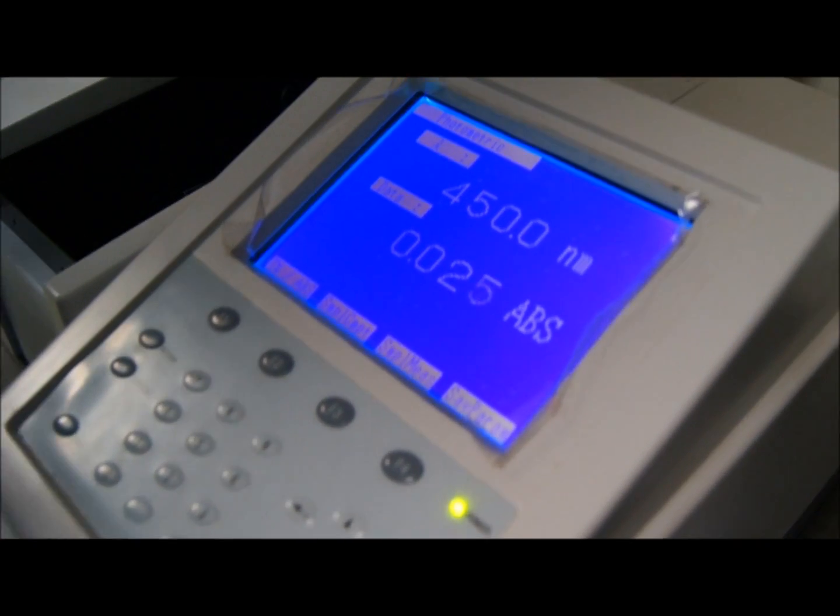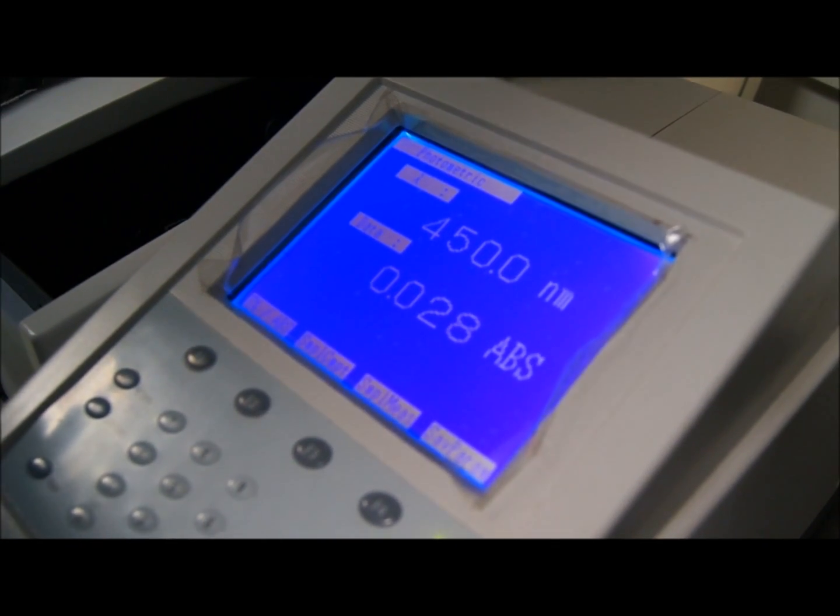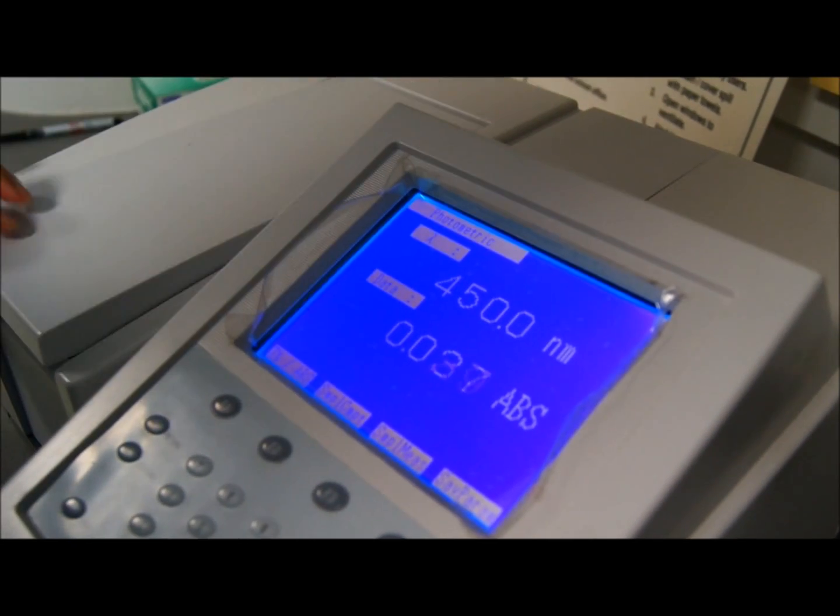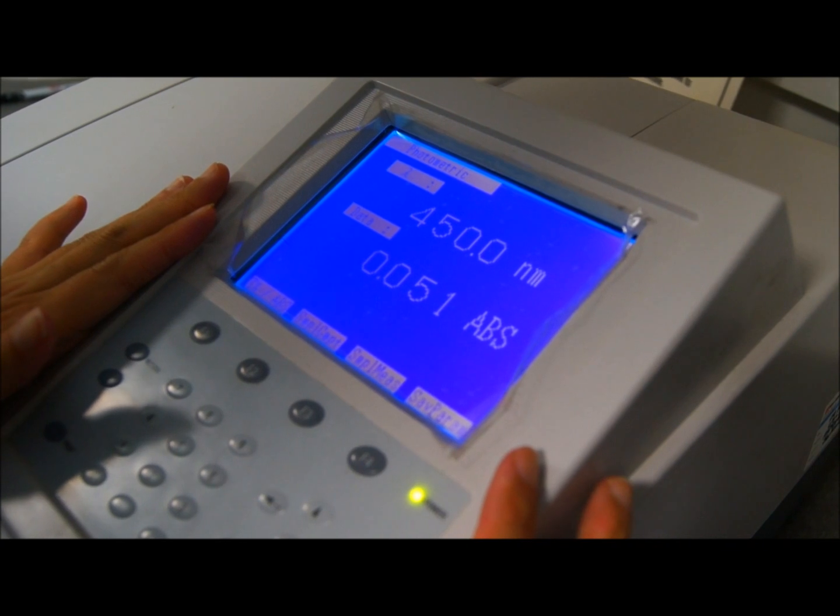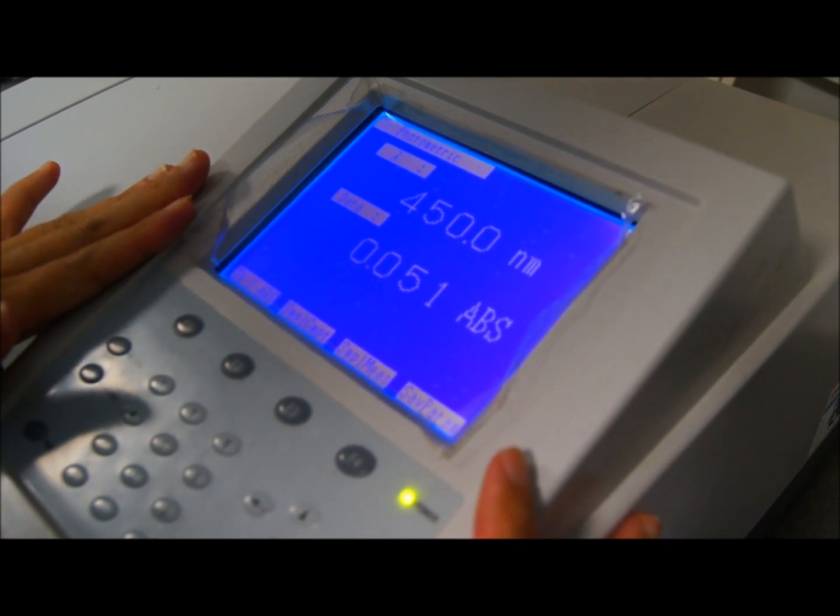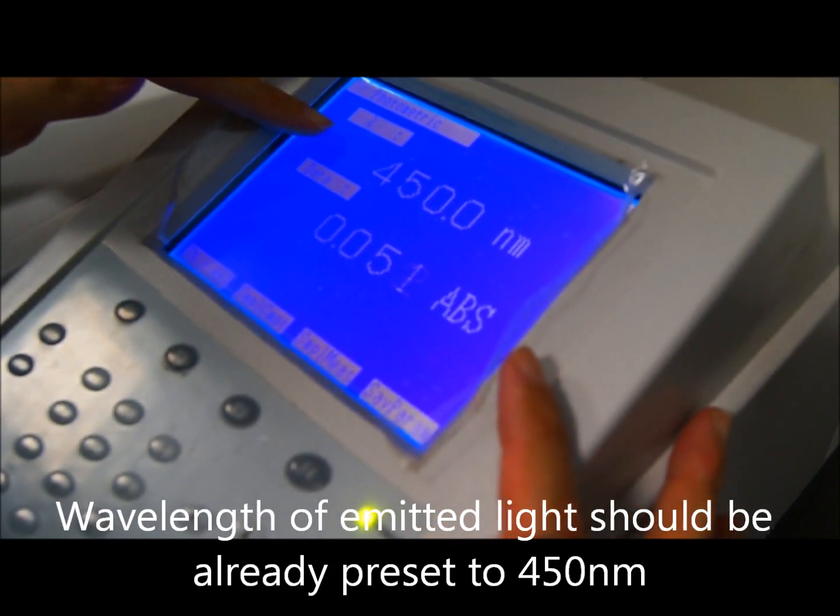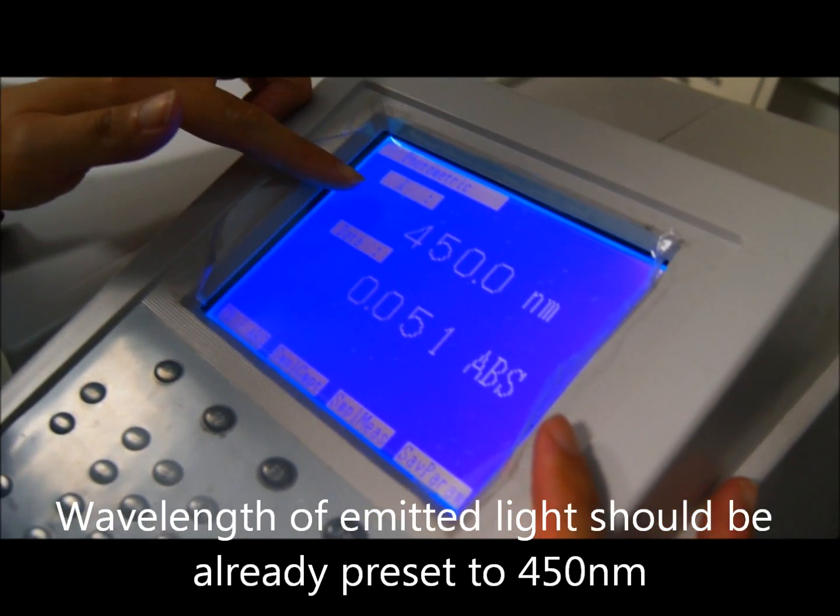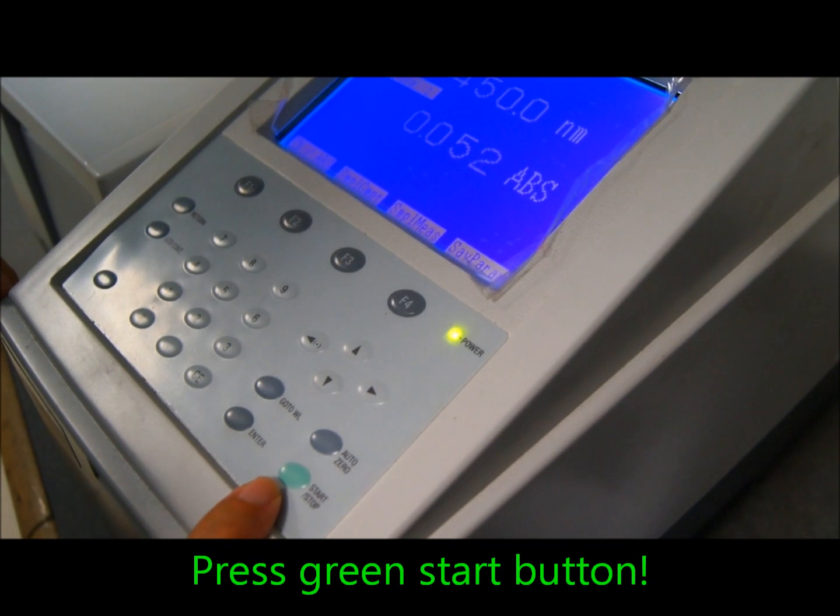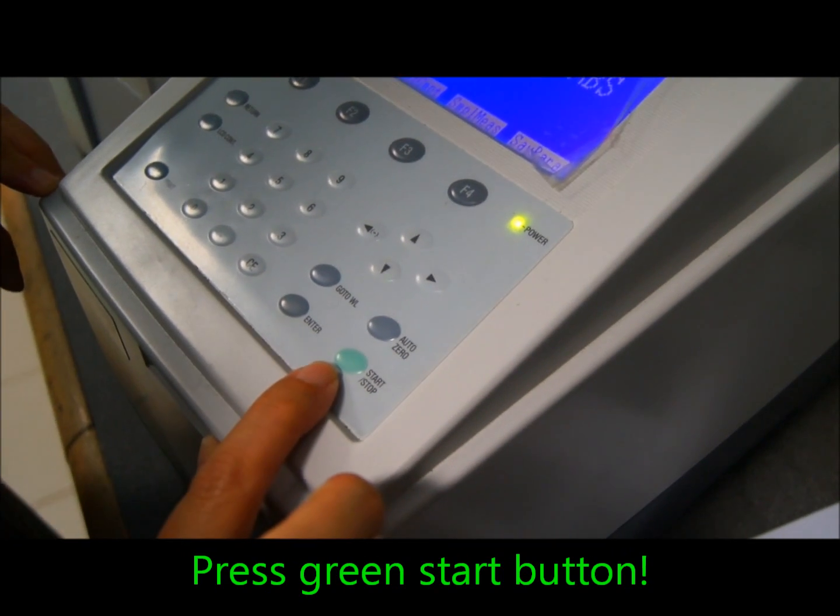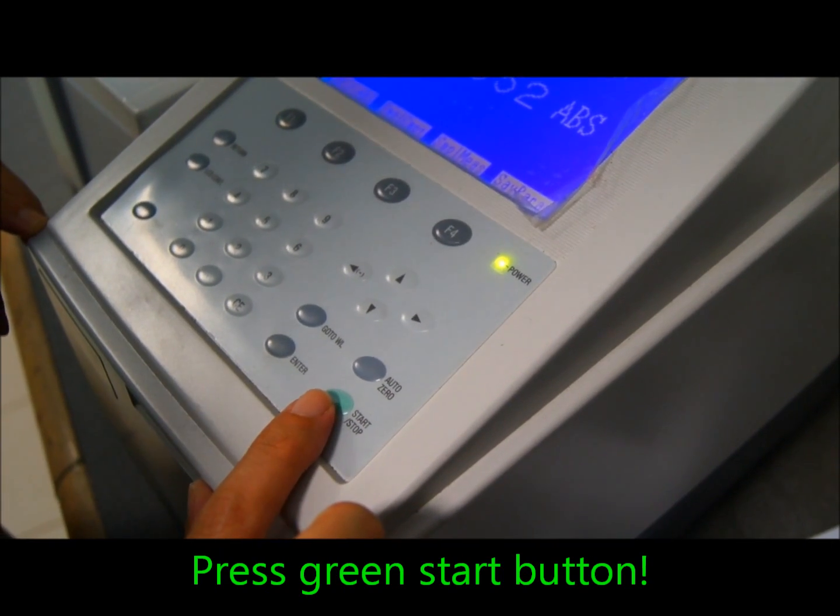Once you have placed the cuvettes inside the spectrophotometer, close the lid and make sure that the display is to the main measurement page, which should look something like that with the wavelength that you are using. And all you need to do is to press the start button, which is at the bottom right-hand corner, it's green. So we will press it now.